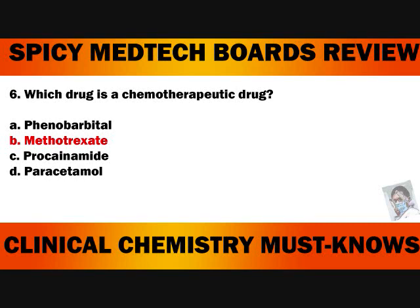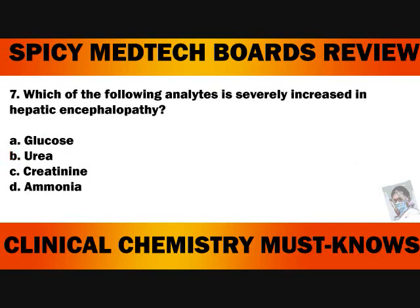When we say chemotherapeutic drug, these are drugs used in chemotherapy or anti-cancer therapy. Letter A, Phenobarbital, is an anti-epileptic drug. Letter C, Procainamide, is used to treat cardiac arrhythmias. And letter D, Paracetamol, is used to treat pain and fever.